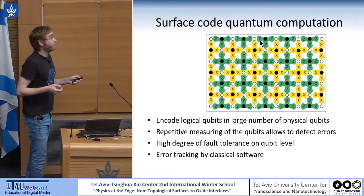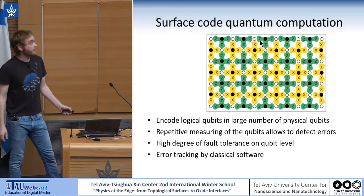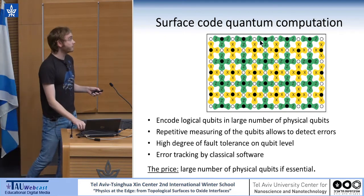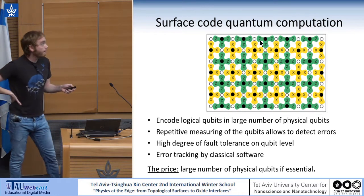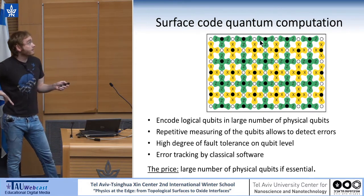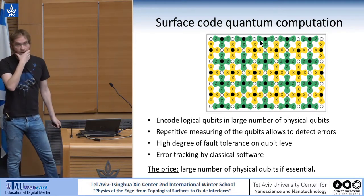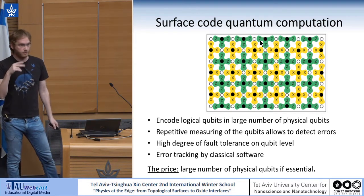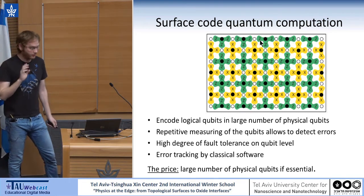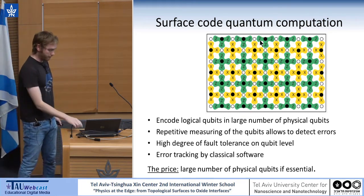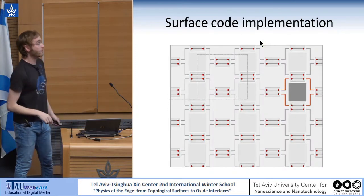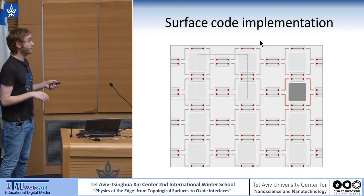The price we have to pay for this is that a very large number of qubits is required. I should also comment that this does not rely on the braiding of quasi-particles with fractional charge at all. So basically, this is our suggestion for the surface code implementation.